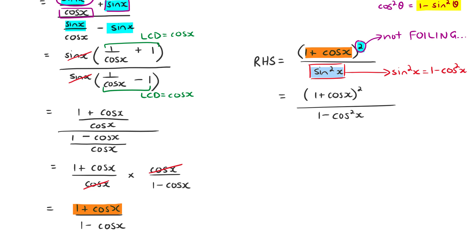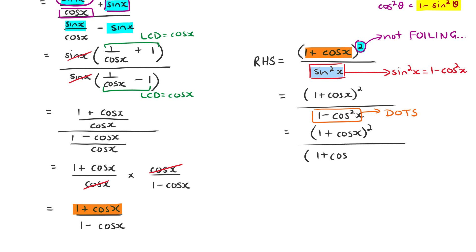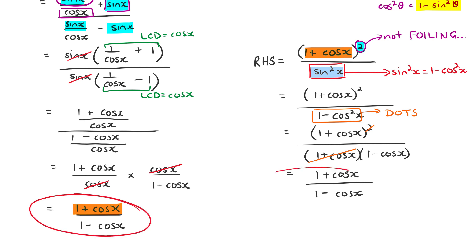We recognise the denominator as a difference of two squares, so we factorize to get (1 plus cos x) all squared over (1 plus cos x)(1 minus cos x). The (1 plus cos x) in the denominator cancels with one from the numerator, leaving (1 plus cos x) over (1 minus cos x). Now we have a match with the left-hand side result.